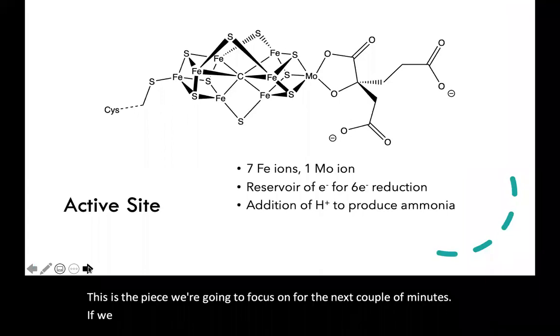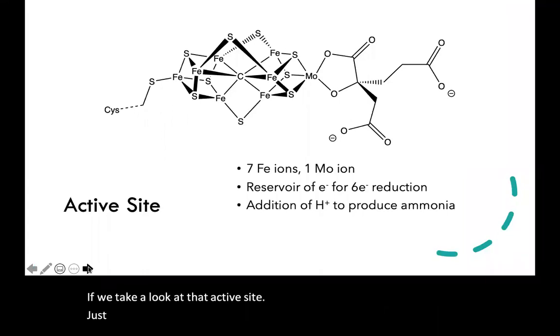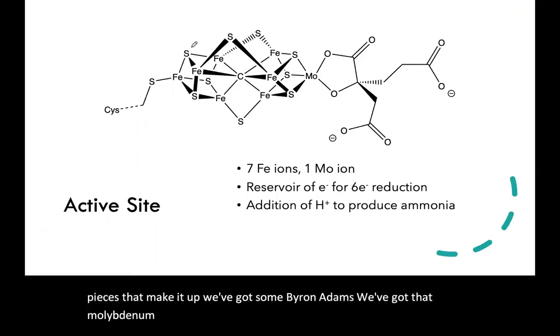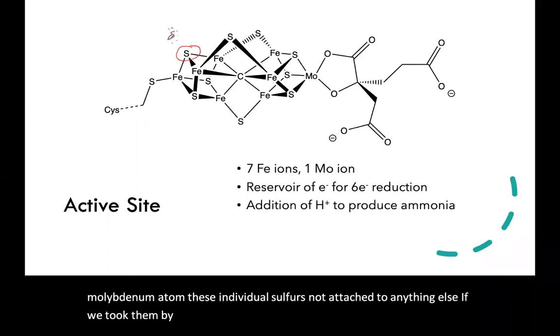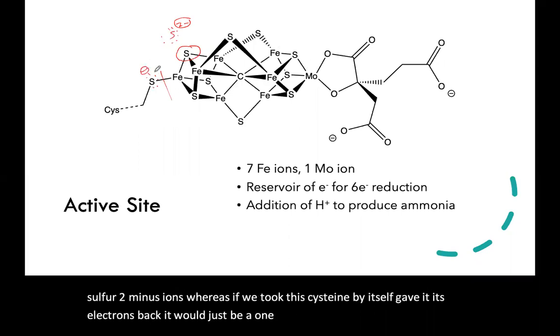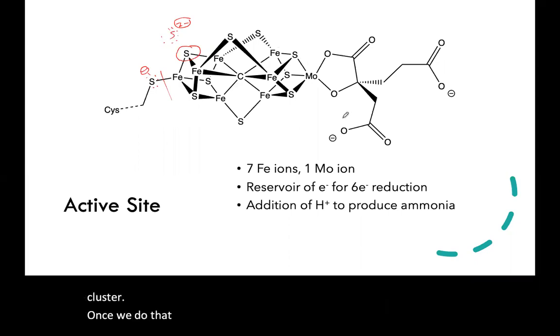If we take a look at that active site just by itself, we're ignoring the protein for now. We can see all these pieces that make it up: we've got some iron atoms, we've got that molybdenum atom, these individual sulfurs not attached to anything else. If we took them by themselves and gave them their octets, those would all be sulfur 2-minus ions, whereas if we took this cysteine by itself and gave it its electrons back, it would just be a 1-minus ion. We can figure out what all of these donors are contributing to this cluster.